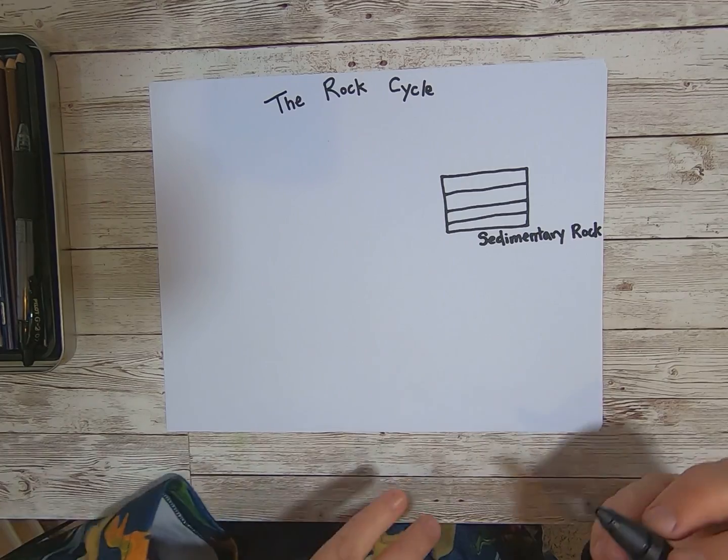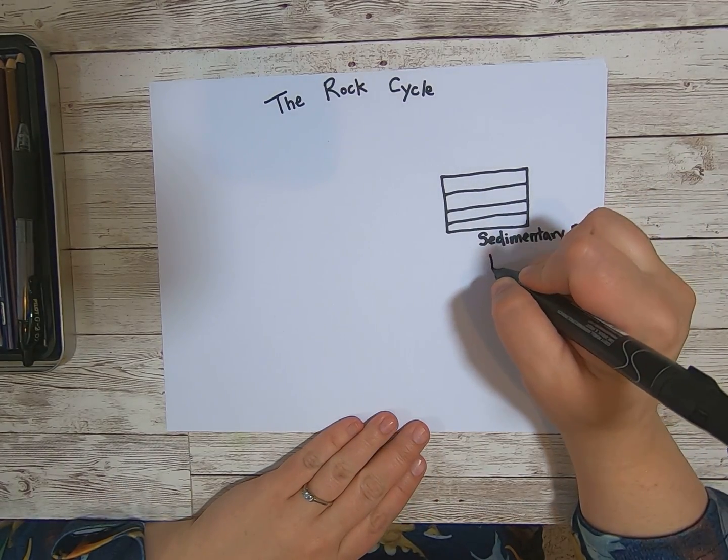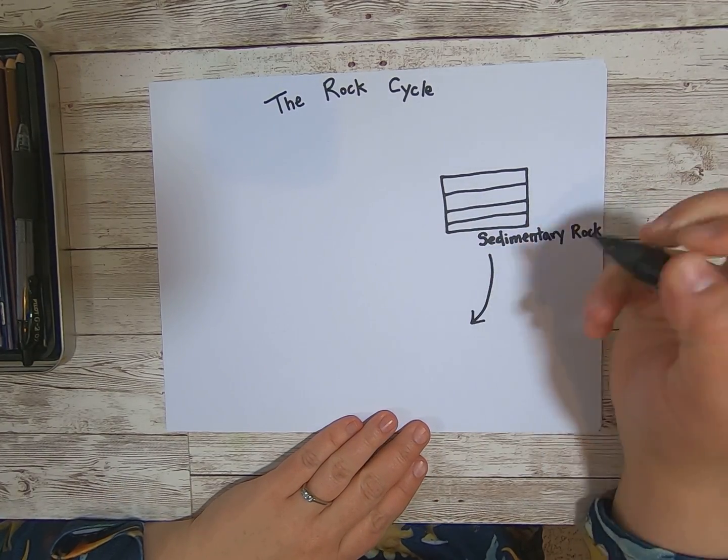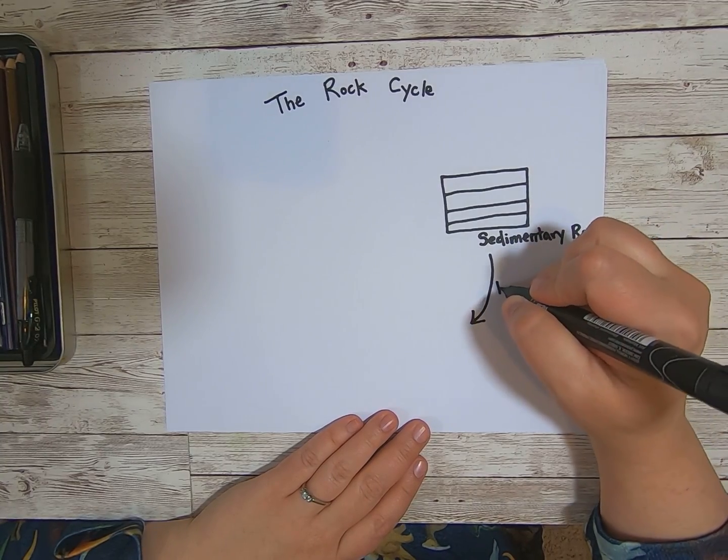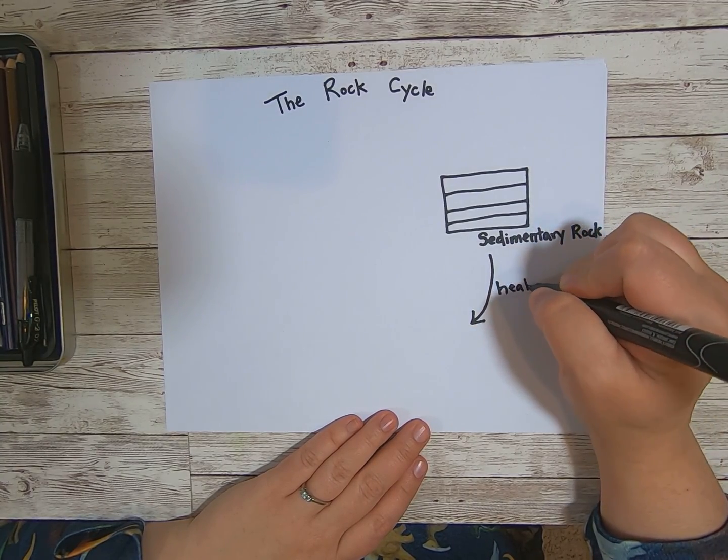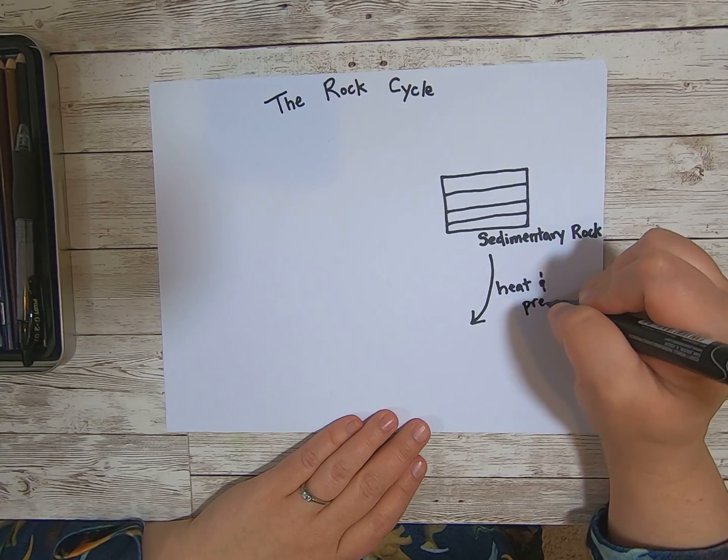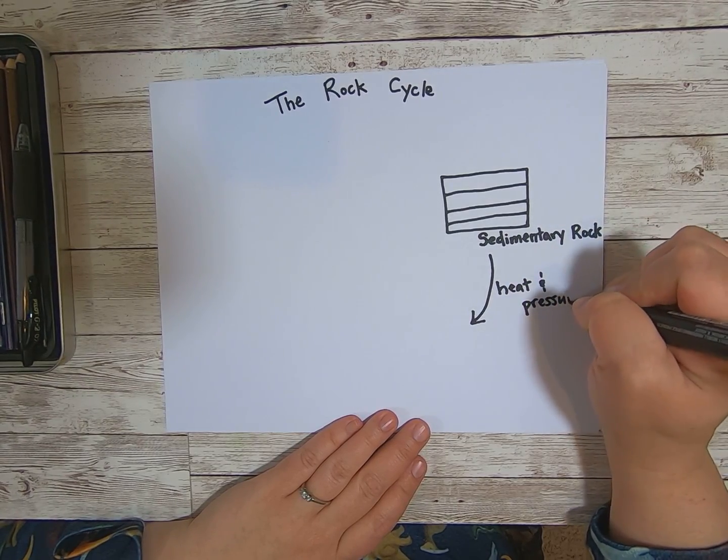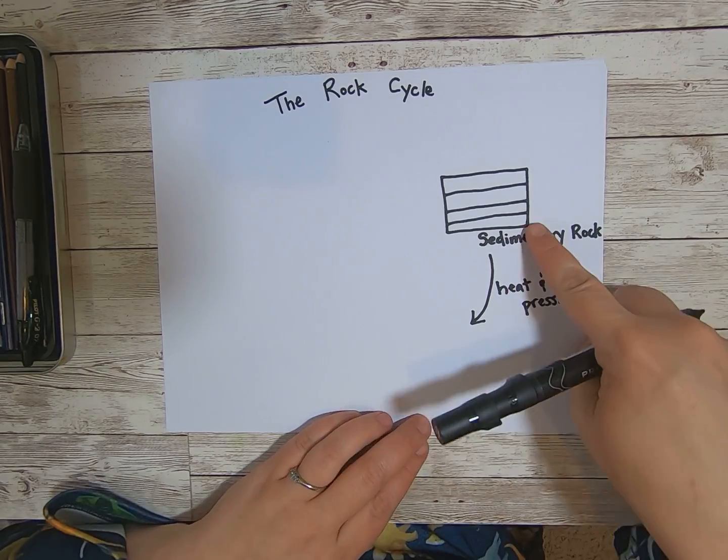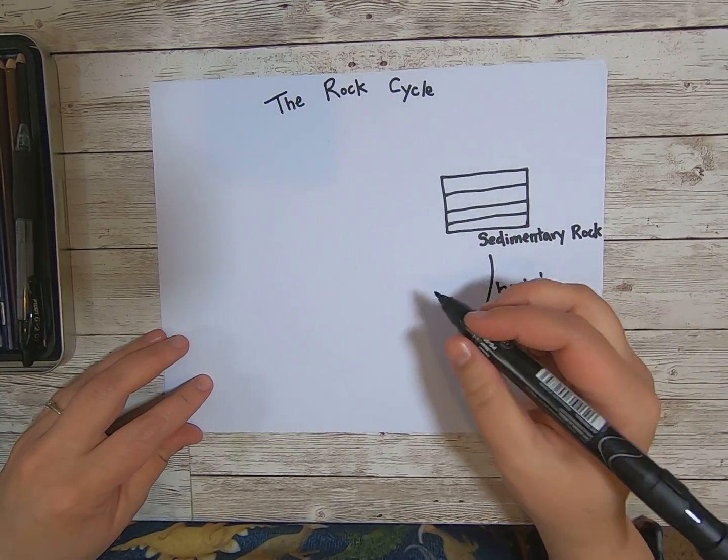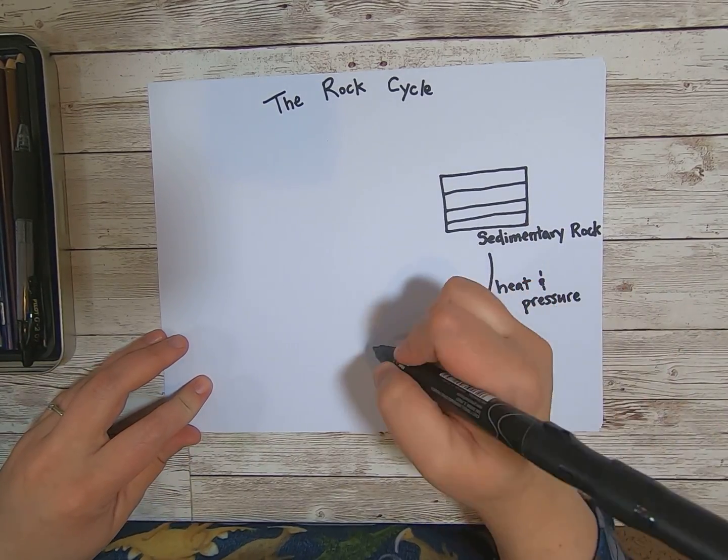Sedimentary rock. Now next we're going to draw an arrow coming down. We are going to label this arrow heat and pressure. Heat and pressure. So sedimentary rock that goes through heat and pressure becomes a new type of rock.